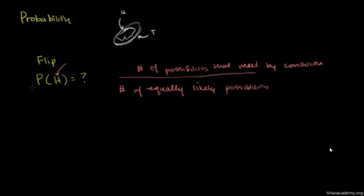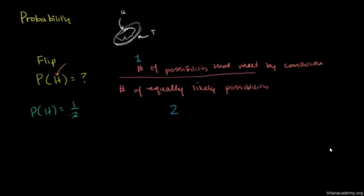So in the case of figuring out the probability of heads: what is the number of equally likely possibilities? Well, there's only two possibilities — we're assuming that the coin lands flat, not on its corner. So there are two equally likely possibilities: you could either get heads or you could get tails. And the number of possibilities that meet my condition? Well, there's only one — the condition of heads. So it'll be one over two. The probability of getting heads is equal to one half, which is the same thing as 50%.